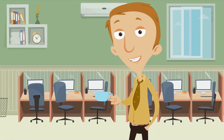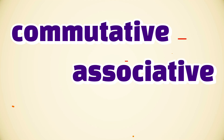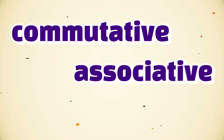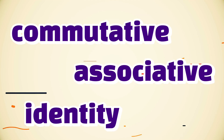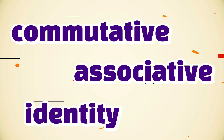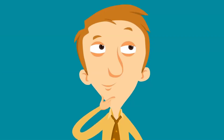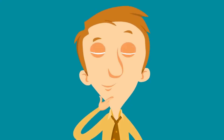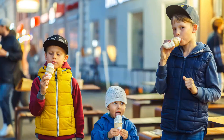We'll be learning three of them: commutative, associative, and identity. Now, I know they have fancy-sounding names, but they're really simple. And who knows, by the end of this video, maybe you'll have a favorite.